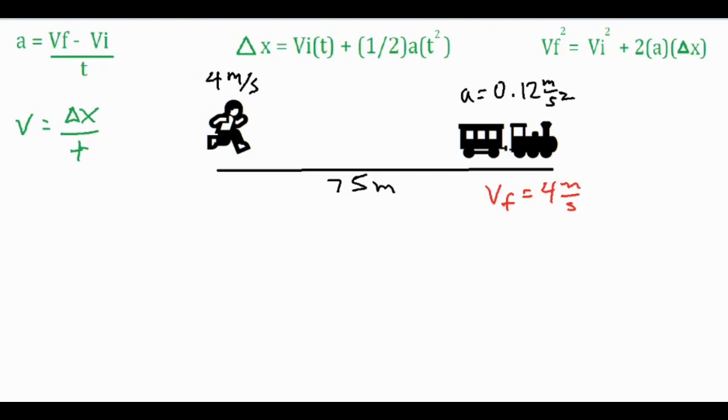So what do we know about the train? We know it has an acceleration of 0.12 meters per second squared and it is going to be starting from rest as most trains do. That's a good start because I have three known variables. If you have three known variables you're able to use any of these three acceleration formulas that you see at the top of your screen.